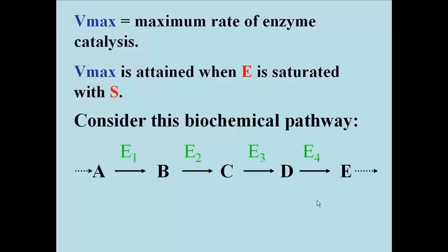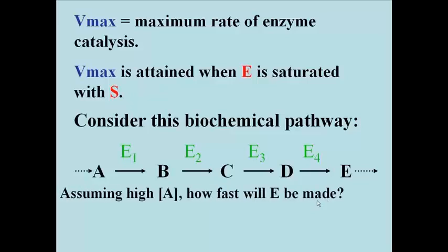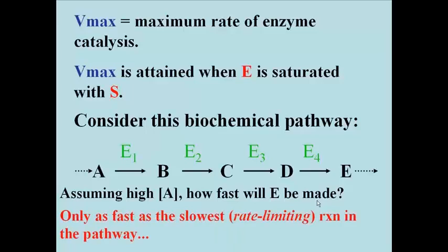Let's look at this biochemical pathway in which A is ultimately converted to E, catalyzed by a series of enzymes E1, E2, and so on. Let's ask, assuming that the concentration of A is not limited, that is, it's abundant, how fast will product E be made? Only as fast as the slowest, or rate-limiting reaction in the pathway. It's a bit like the weakest link in a chain analogy.